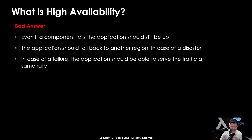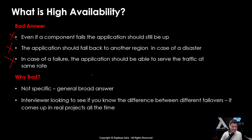First question: what is high availability? Sounds like a simple question, but so many candidates mess this up. The bad answers I hear are: even if a component fails the application should still be up, or the application should fall back to another region in case of a disaster, or in case of a failure the application should be able to serve the traffic at the same rate. Why are these bad? These are not specific — they are general, broad answers. The interviewer is looking to see if you know the difference between different failover mechanisms, because it comes up in real projects all the time.